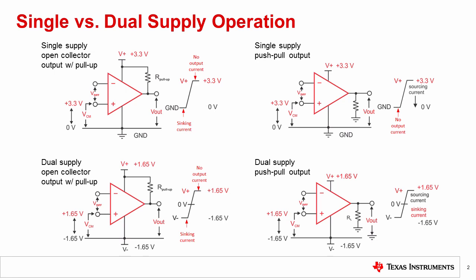This slide shows four examples of 3.3 volt open collector and push-pull output comparators being used with both single and dual supplies. The main differences between configurations are the input and output voltage range and the output current behavior.